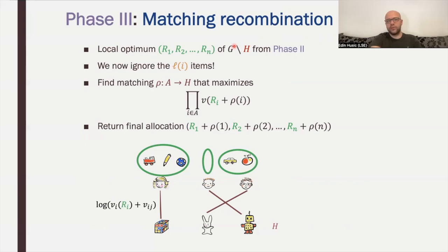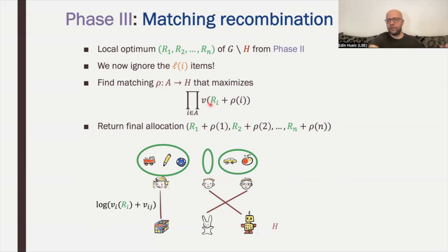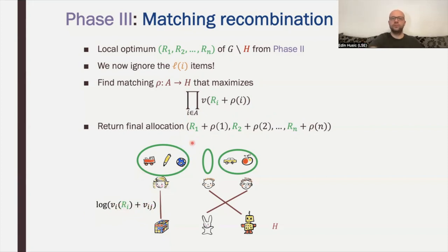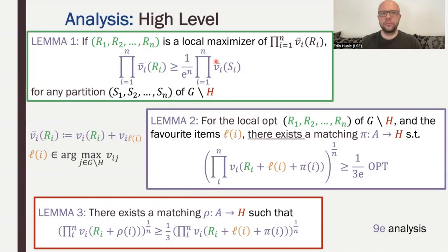In phase three, we start with the local optimum allocation from the local search, ignore the favorite items (they were only used to define the modified valuation), take the items H, and reallocate them optimally. We find a matching of items H to agents that maximizes Nash welfare where agents already hold their set R_i from the local search. We solve this by maximum weight perfect matching using weights log(v_i(R_i) + v_{ij}), and the resulting matching gives our output allocation.